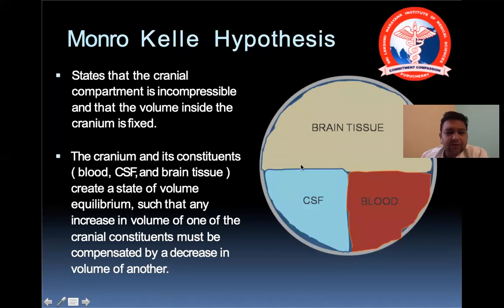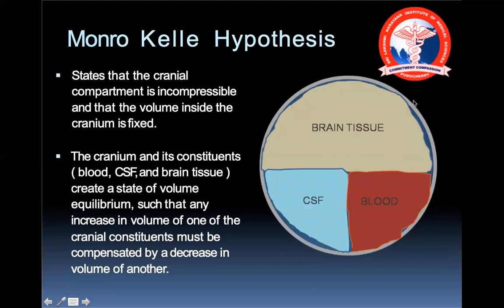The Monroe-Kelly hypothesis is very important when it comes to brain injury. It states that the cranial compartment is incompressible and the volume inside the cranium is fixed. The cranium and its constituents — blood, cerebrospinal fluid, and brain tissue — create a state of volume equilibrium, such that any increase in volume of one constituent must be compensated by a decrease in another.